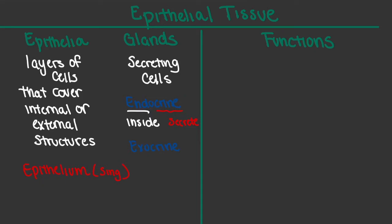If we look at the word exocrine, exo refers to something on the outside or exiting something. And again, our word crin or crinon refers to the term secrete. So for exocrine glands, these are glands that are going to release things or substances to the outside of the body.